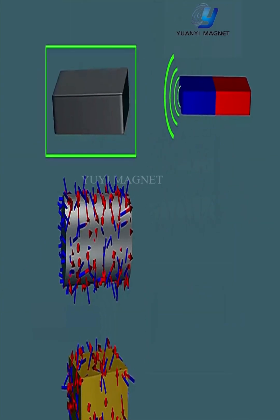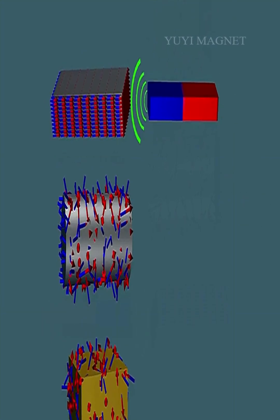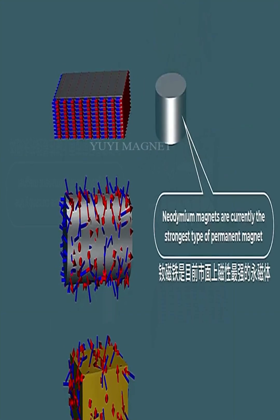In most materials, these small magnetic fields are randomly oriented and cancel each other out.